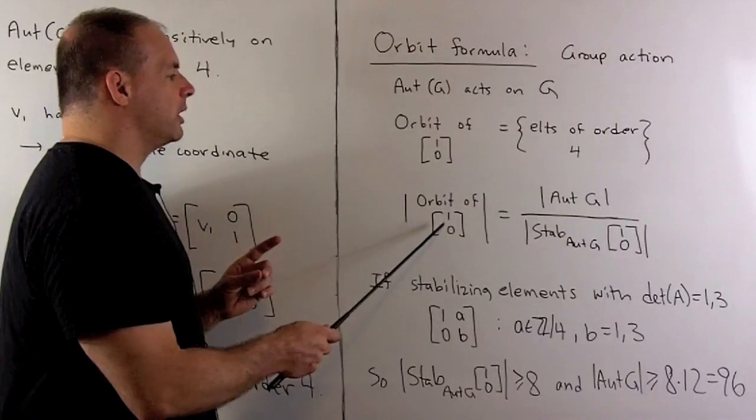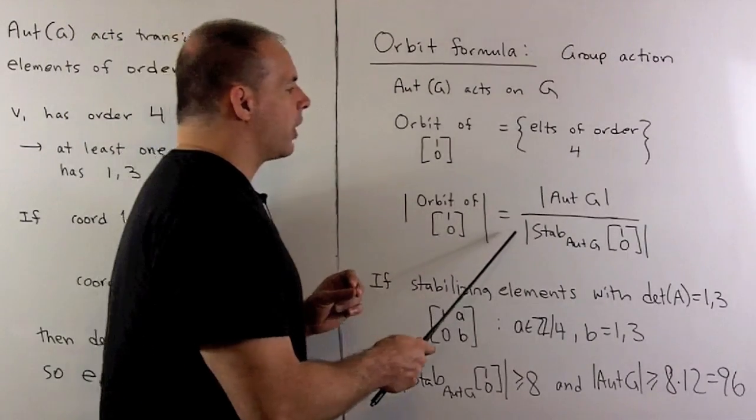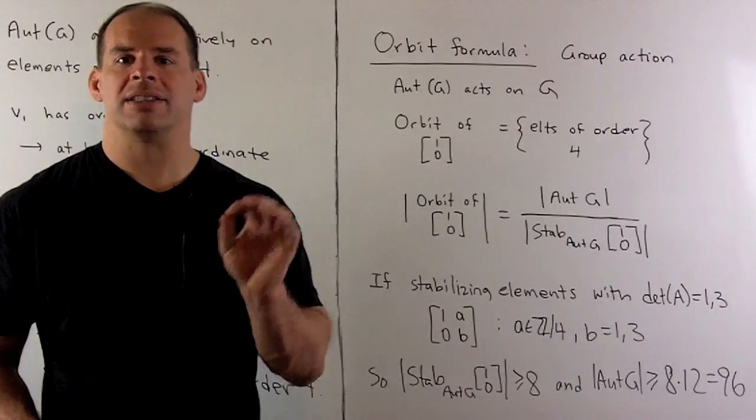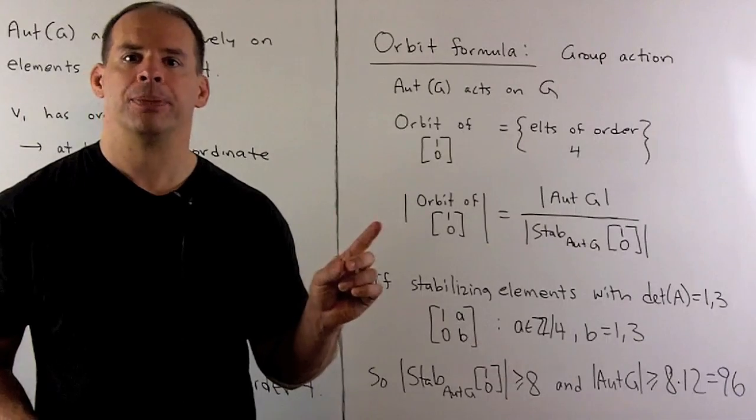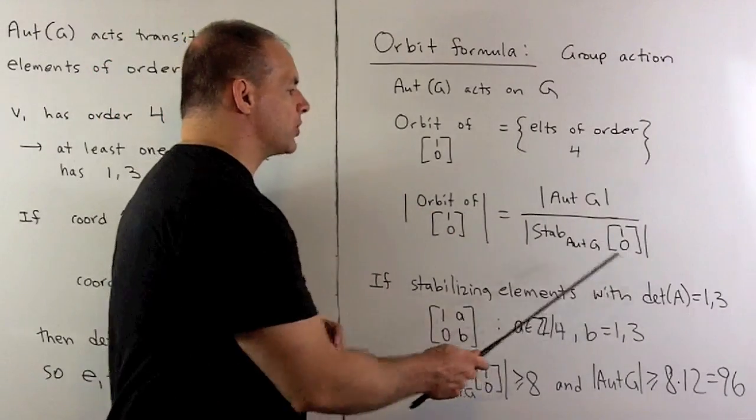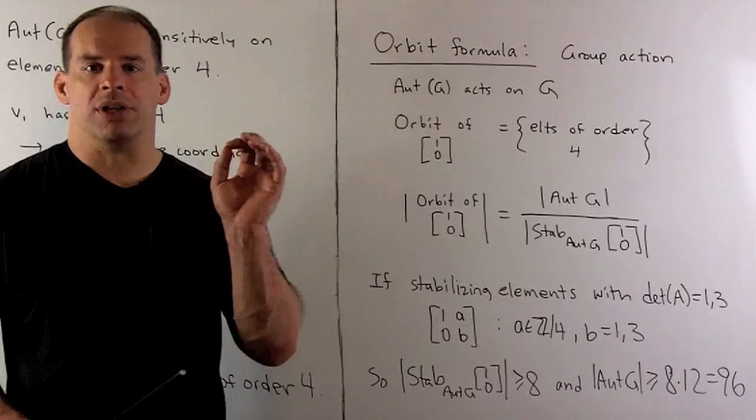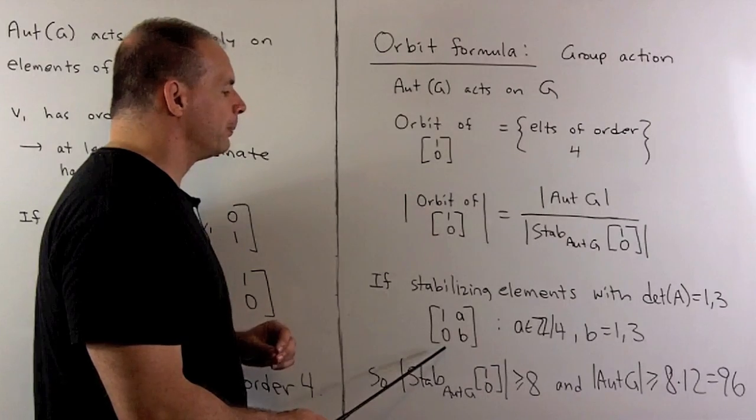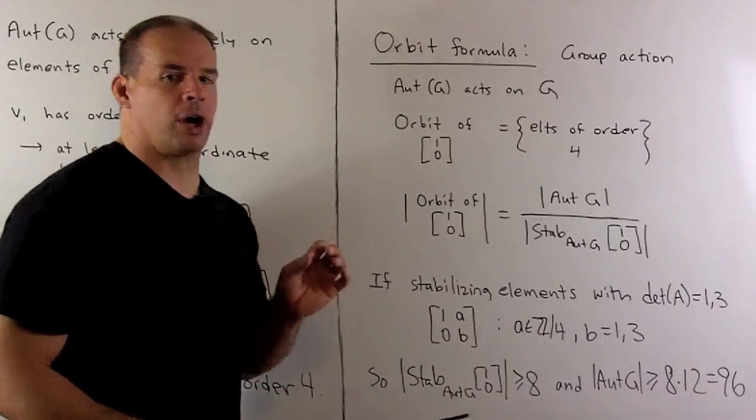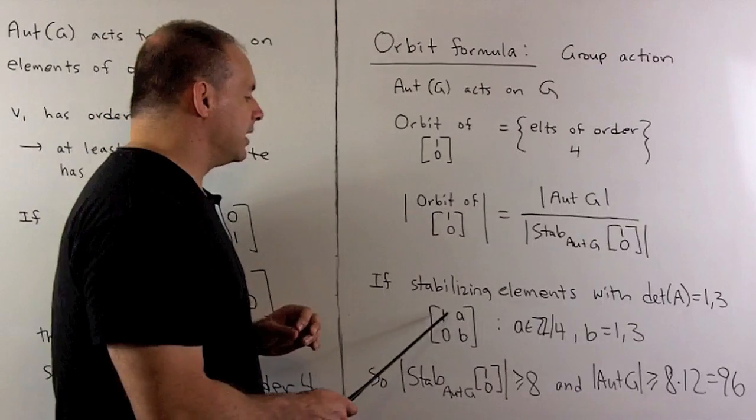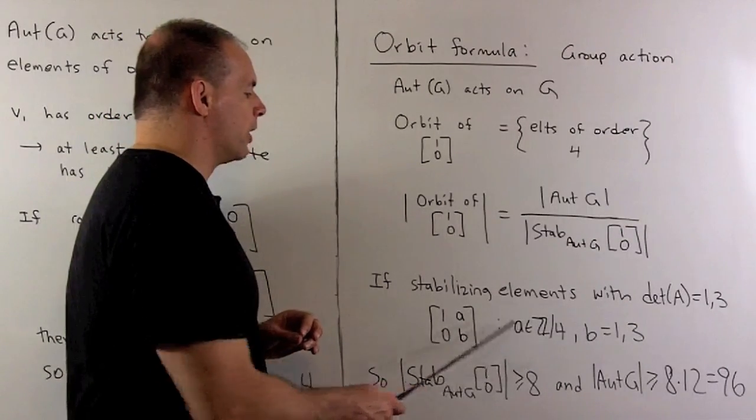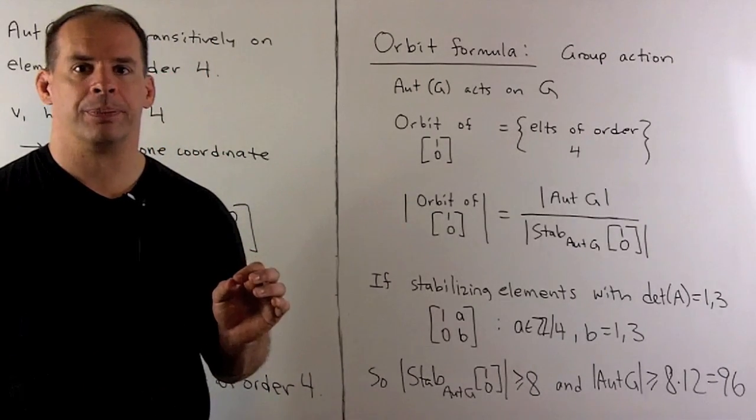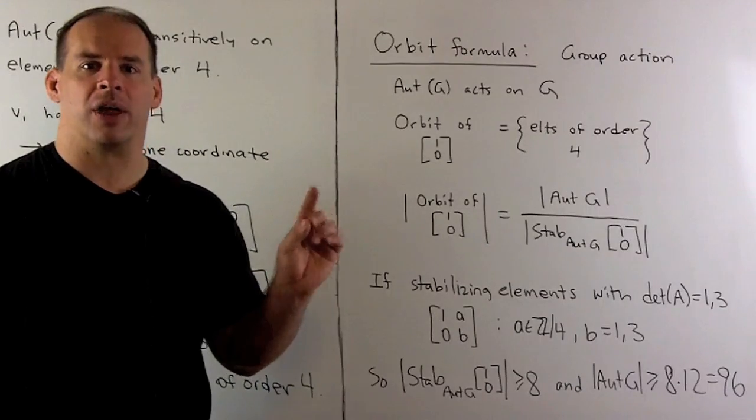Now, we know that this is 12. So, we want to figure out what's going on in the stabilizer. If I consider only stabilizing elements with determinant 1 or 3, so there might be others, well, what's going to happen? If we're stabilizing 1,0, then 1,0 goes to 1,0. So, we have to have 1,0 in the first column. For A and B, I can have anything as long as determinant is 1 or 3. So, that means I can let A be equal to anything. So, I have four possibilities. And then B has to be equal to 1 or 3, which gives me two possibilities. So, our stabilizer has order greater than or equal to 8.